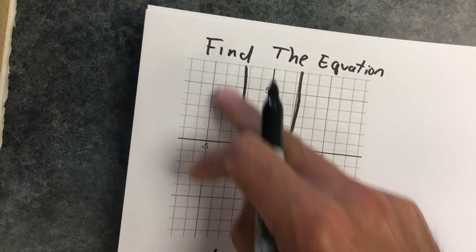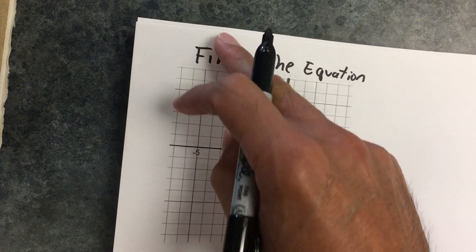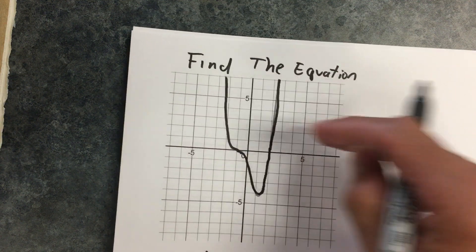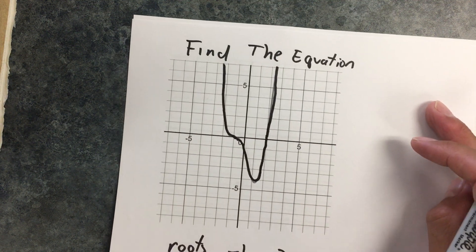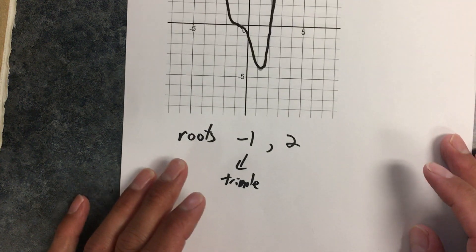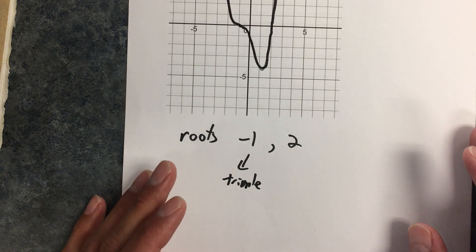The order of this polynomial is even because it extends upward this way and this way, and the leading coefficient is positive. Watch the last video if you're not 100% clear on what that means.